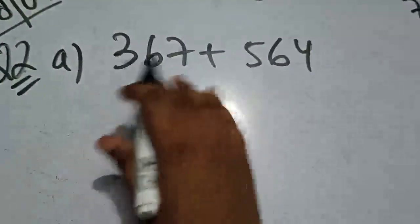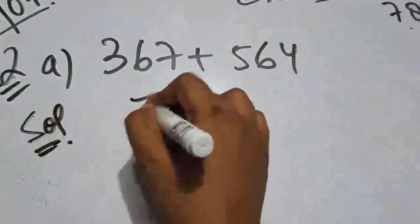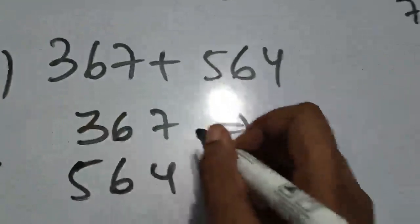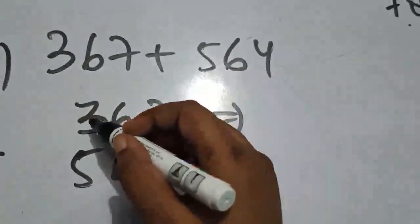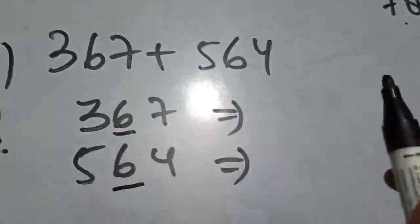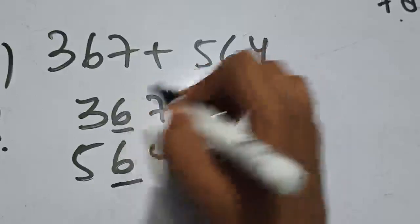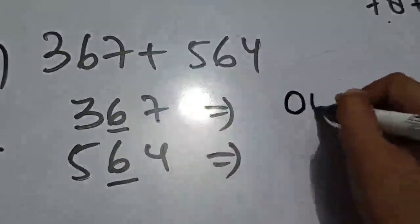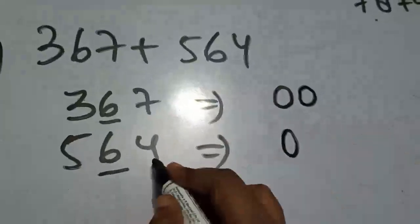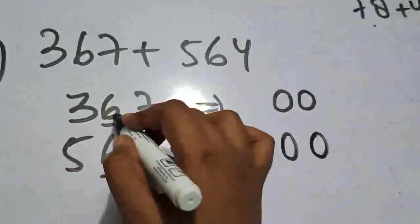Question number 2 میں sum ہی کرنا ہے لیکن nearest 10 کی جگہ nearest hundred کہا ہے۔ 307 اور 564 لکھ لیا۔ Nearest hundred کے لیے: ones، tens، hundreds — اس سے just پہلے والی value دیکھو۔ جہاں سے underline ہے وہاں سے zero لگانا شروع کرو۔ یہاں ایک digit اور ہے — اس کی جگہ بھی zero۔